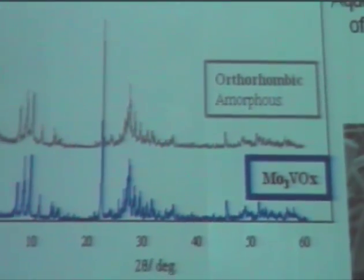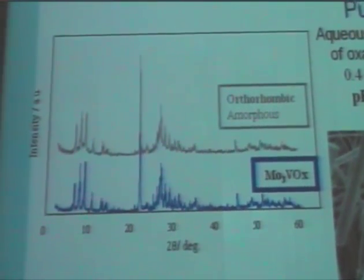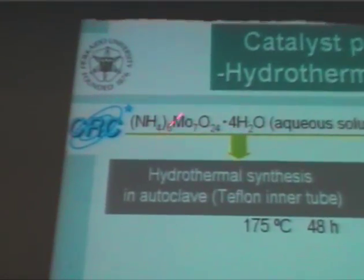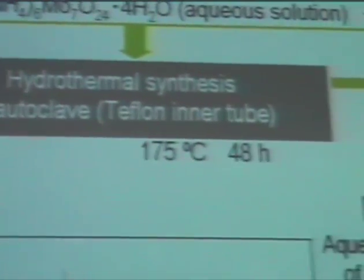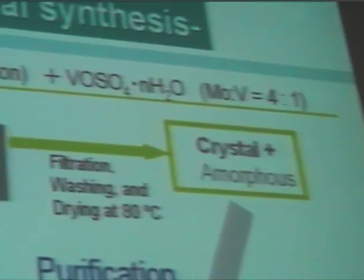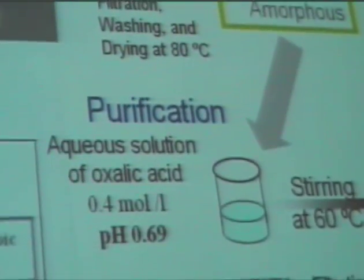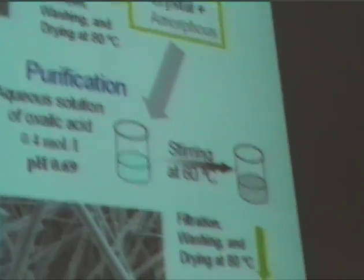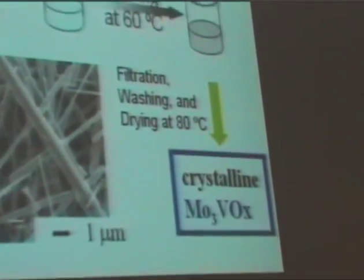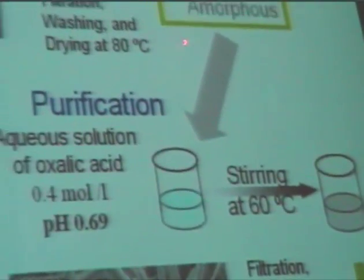Now I can move on to how to prepare this catalyst. The process itself is very simple — you can conduct it quite easily. You have this kind of precursor, which is easily available commercially. You can dissolve the sulfate in water, and then you can start with a hydrothermal synthesis at 175°C for 48 hours, for example. And then you can get a solid product. You can filter it out and get the solid.